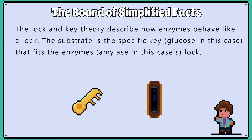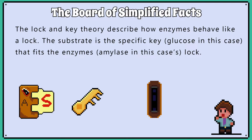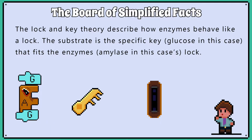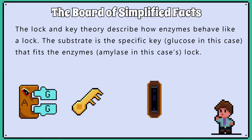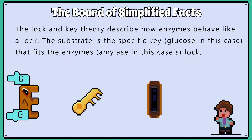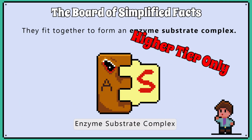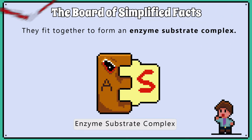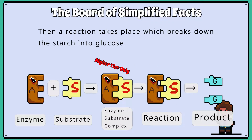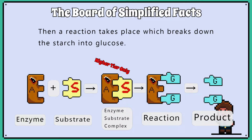The lock and key theory describes how enzymes behave like a lock. The substrate is a specific key — starch in this case — that fits the enzyme's lock, amylase in this case. They fit together to form an enzyme-substrate complex. Then a reaction takes place which breaks down the starch into glucose.